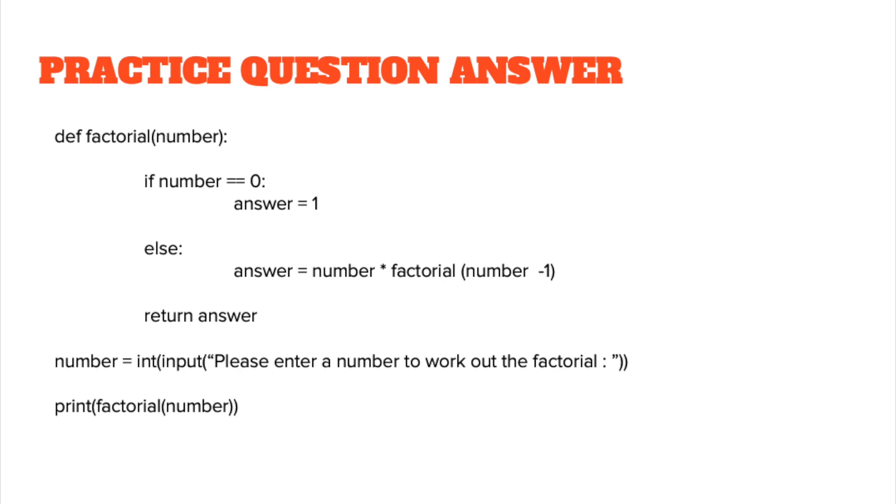On screen is a possible solution. We've got a factorial function which takes the number. If the number is equal to zero, answer is equal to one, else answer becomes number times factorial of number minus one, and we keep doing it until we reach that exit condition of number equals zero. Outside the selection you return the answer because you want to return the answer back to the main program. Outside the function we take the input, so number is the integer input of whatever the user is going to type in. We're going to then print the factorial number out which is going to be whatever the answer is. So run the code and have a go, test it out and see if it actually gives you the right factorials.